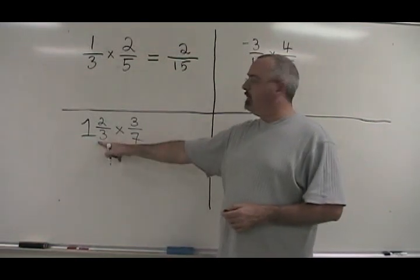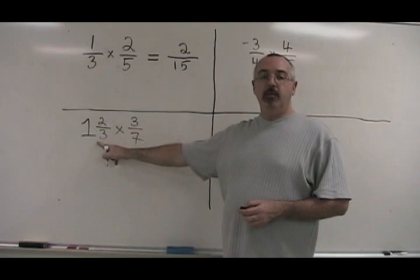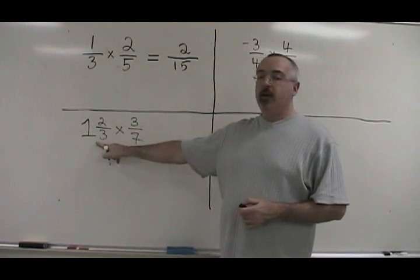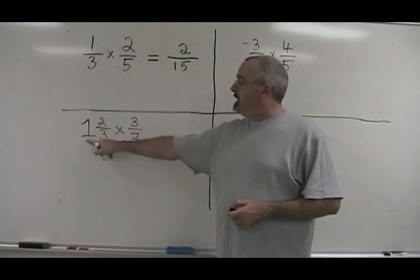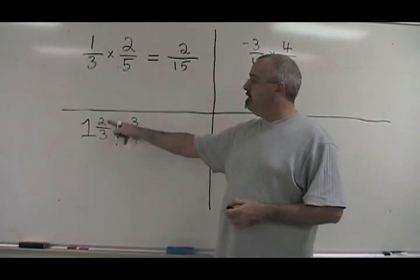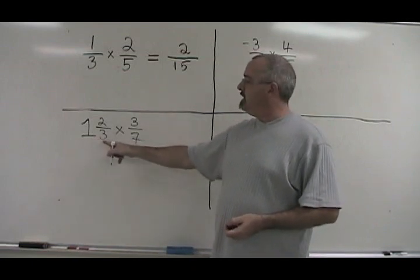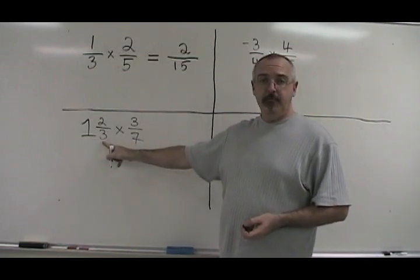What if you have a mixed number, like 1 and 2 thirds? You have to convert it into an improper fraction before you can start. The way you do that is: big number times denominator plus numerator gives you your new numerator. Big number 1 times denominator 3 is 3, plus